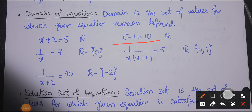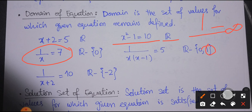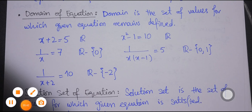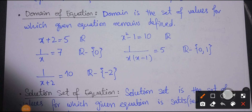Similarly, for 'x² minus 1 equals 10,' the domain is the set of all real numbers. Now consider an equation where the variable is in the denominator: '1 over x equals 7.' We know that 1 divided by 0 is undefined. When we put x equals 0, we get 1/0, which is undefined. So we must remove 0 from the domain. The domain becomes the set of all real numbers except 0 — x can be any real value, positive, negative, or decimal, but not 0.